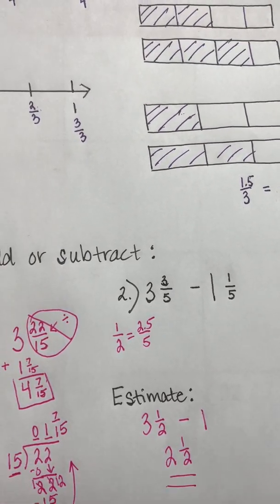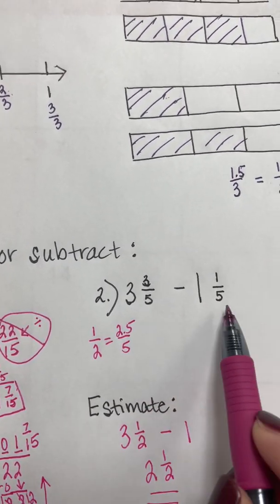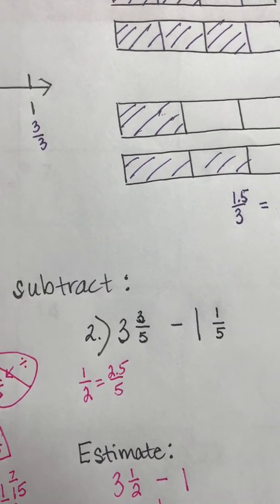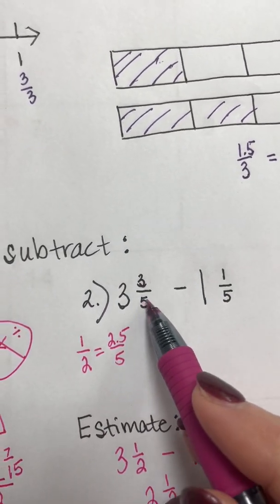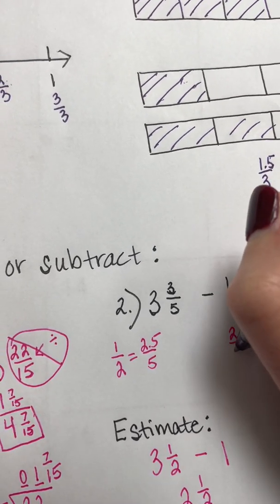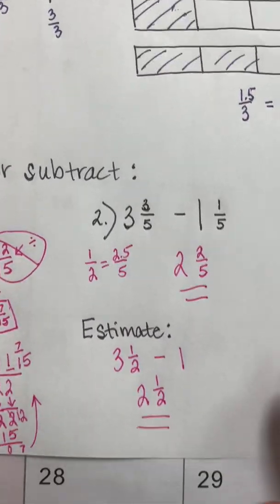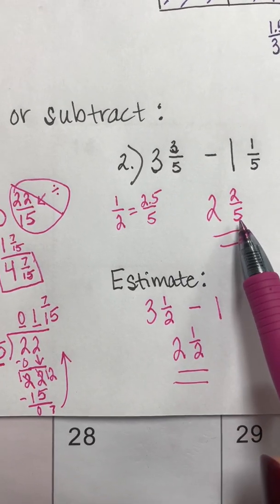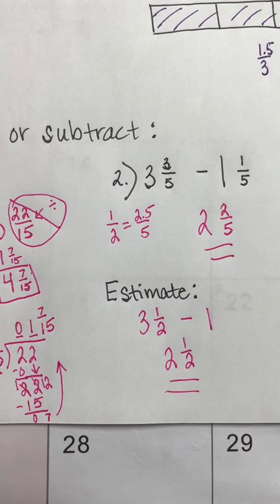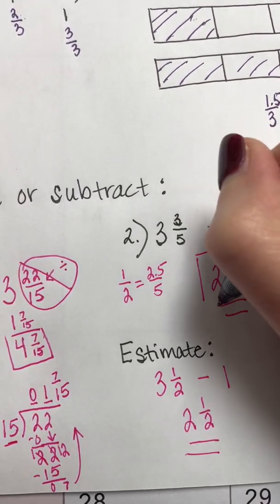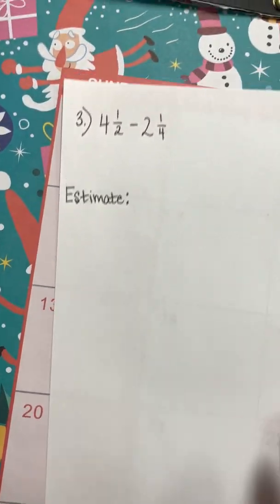Now the actual problem: three and three-fifths minus one and one-fifth. My denominators already match — I don't have to fix anything. Three-fifths minus one-fifth is two-fifths, and three minus one is two. Our answer is two and two-fifths. Comparing to our estimate of two and a half: two-fifths is 2/5 versus 2.5/5 — very close to our estimate. That was a great estimate!